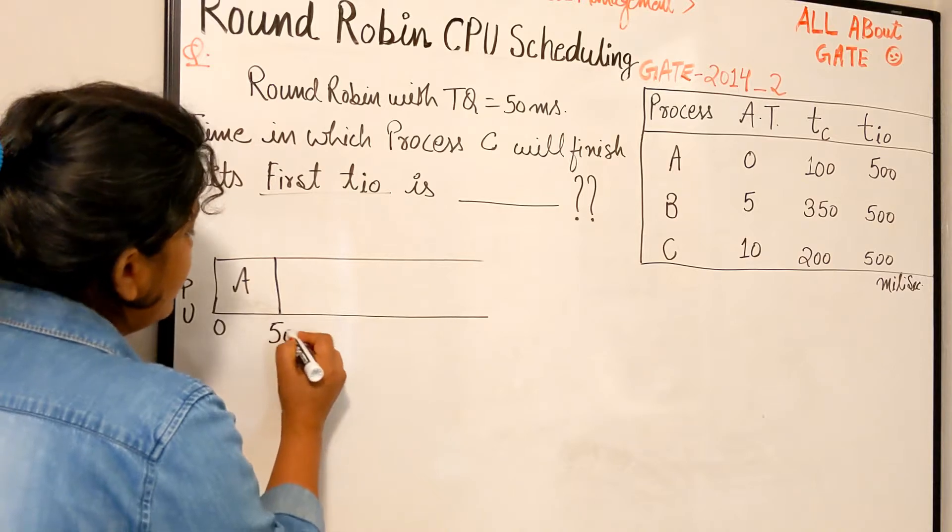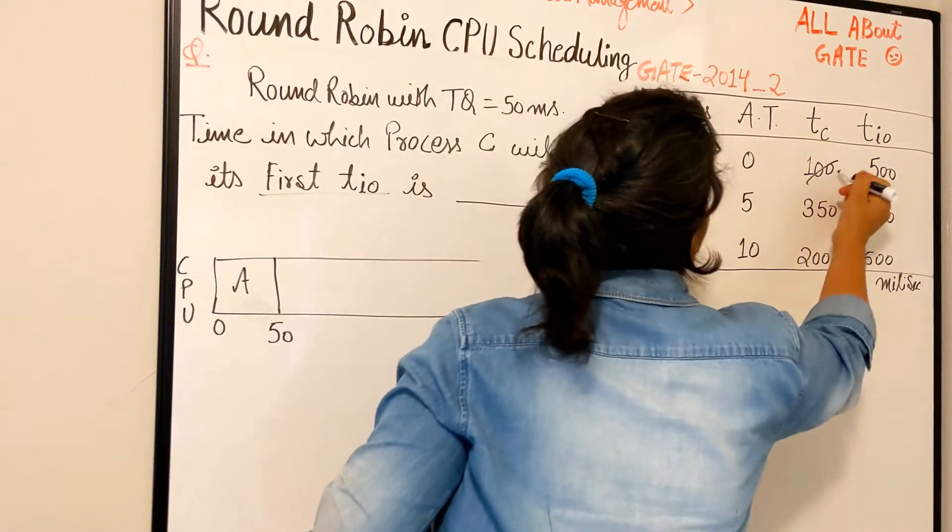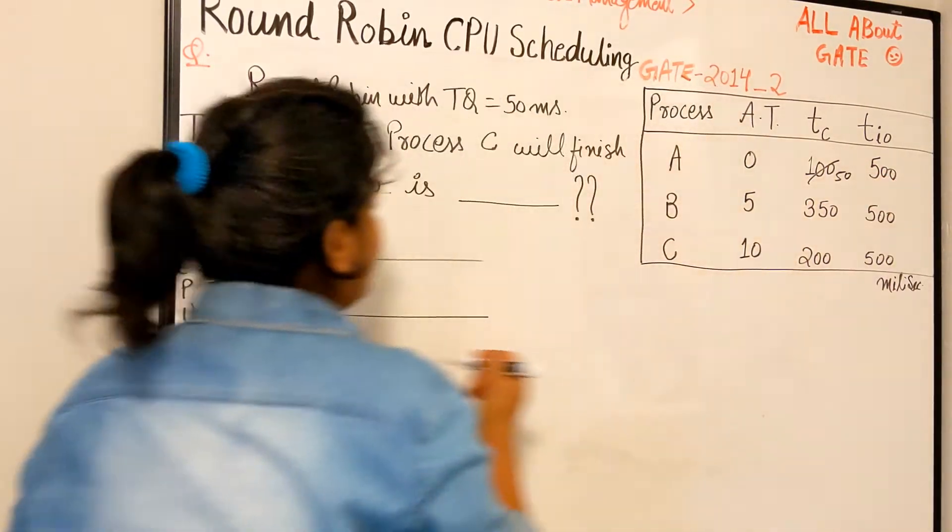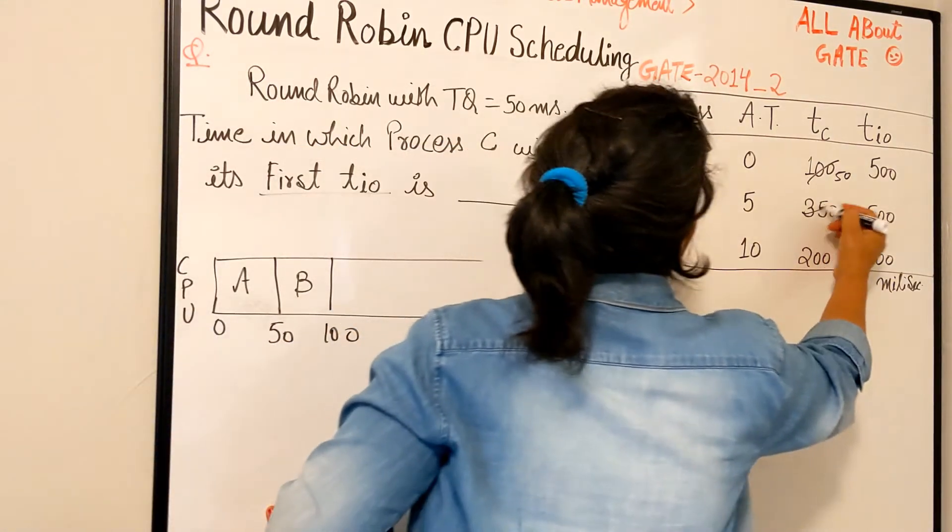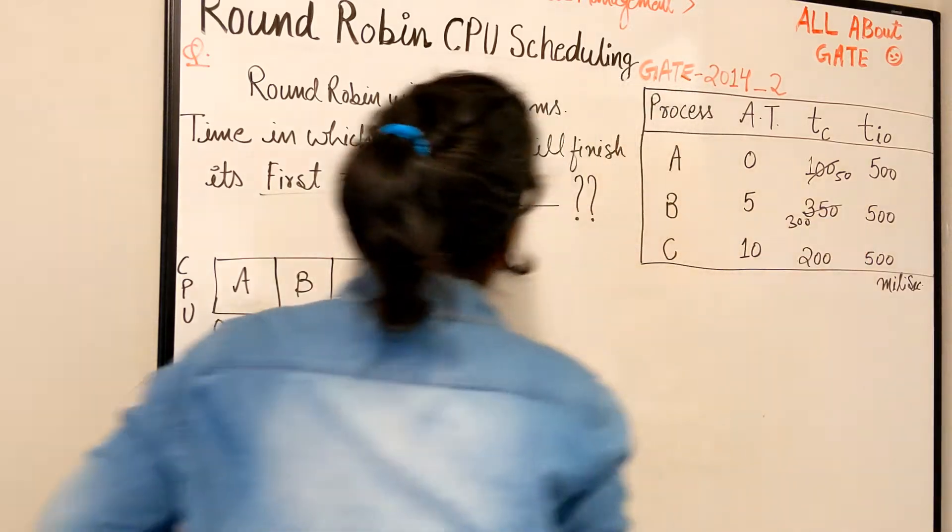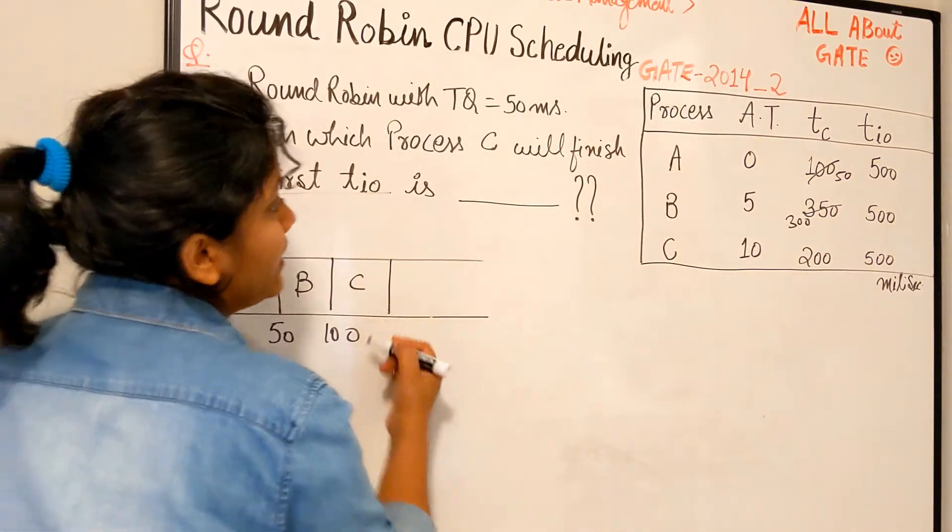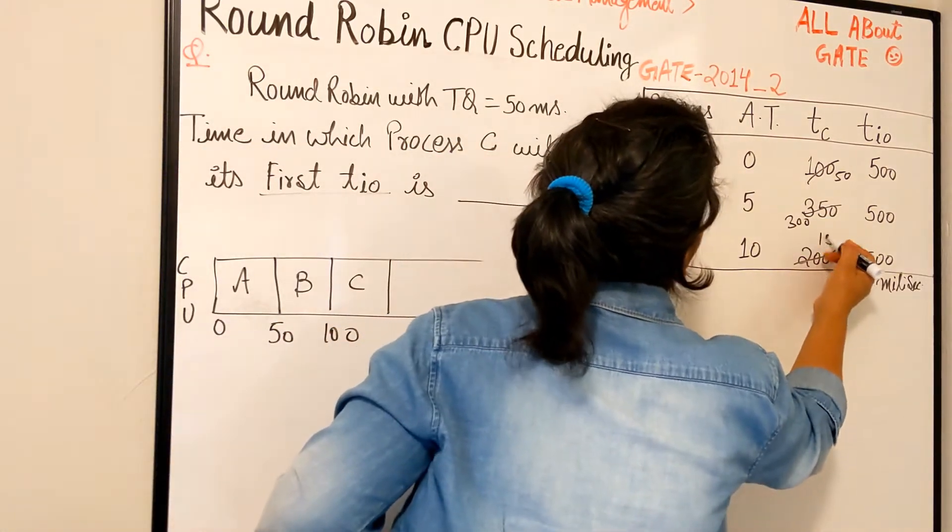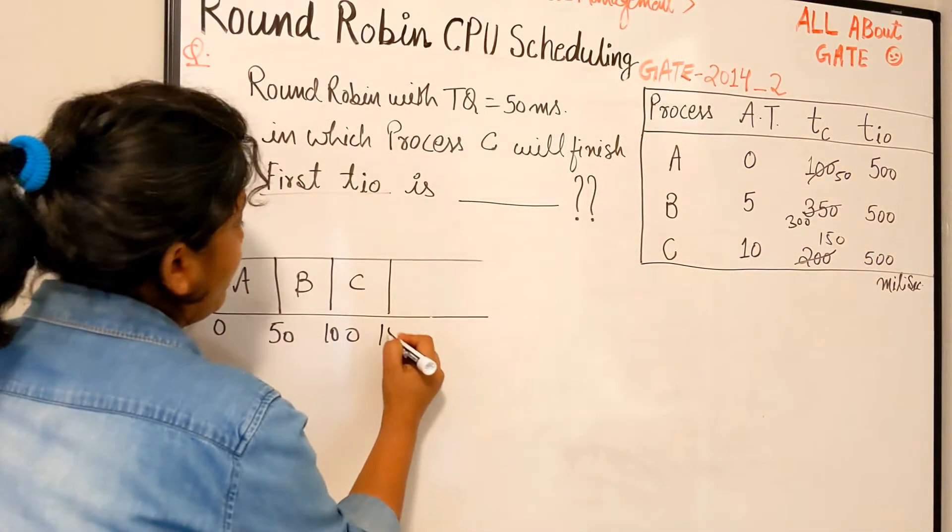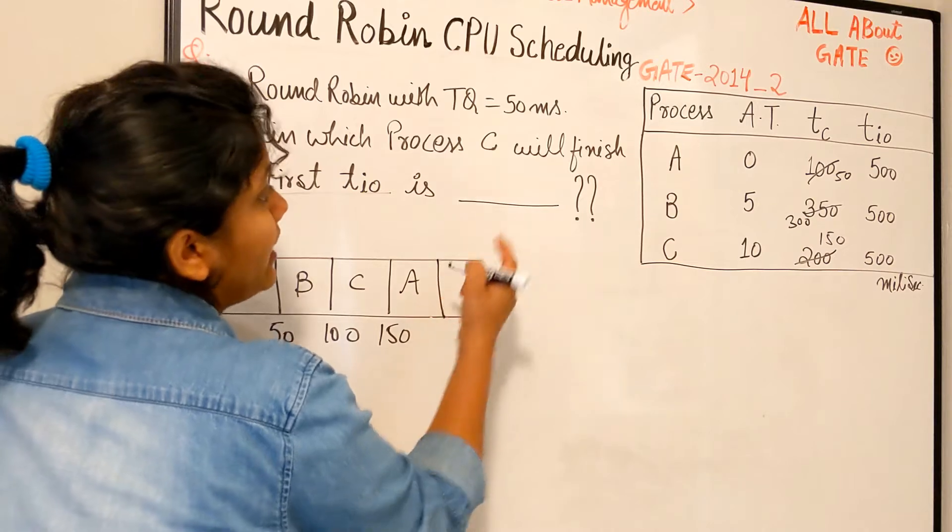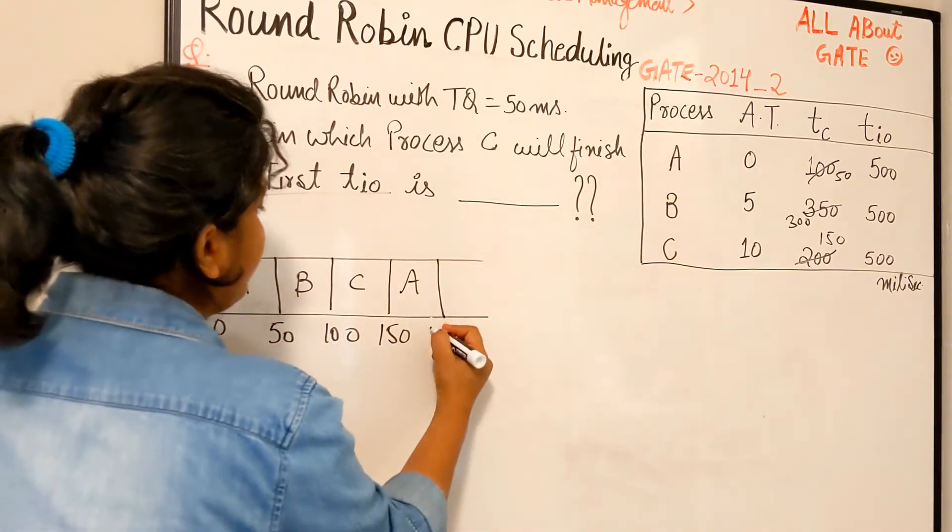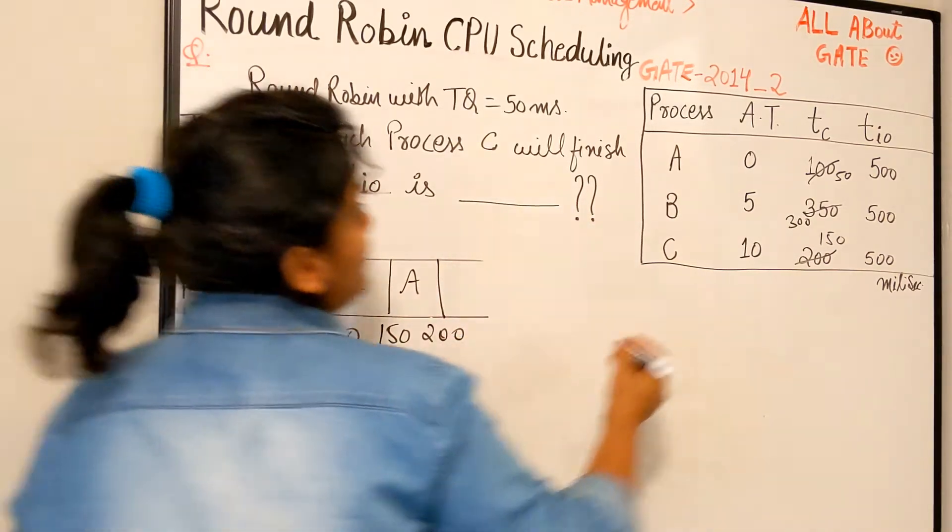So because the quantum is 50, so it becomes 50. Correct. Next is B, 100, and it becomes 300. Next C, 150, 150. All right.